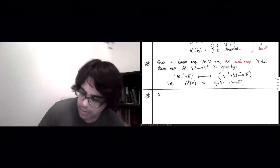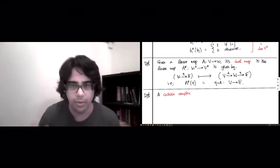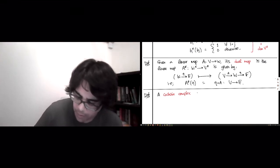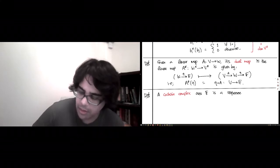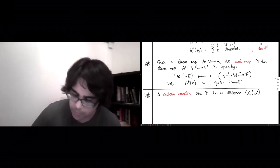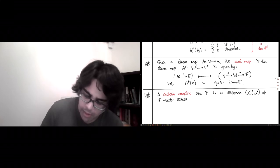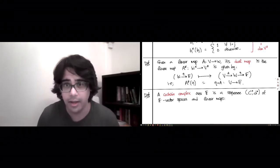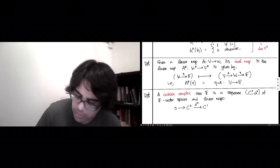A co-chain complex over F is a sequence. Here, all the indexing happens in superscripts by long-standing convention. This is a sequence of F vector spaces and linear maps. The convention is it goes up in the indexing, unlike the chain complex boundary operator. So 0 to C0, and now this is the map D0 goes to C1, D1 goes to C2, and all the way up.